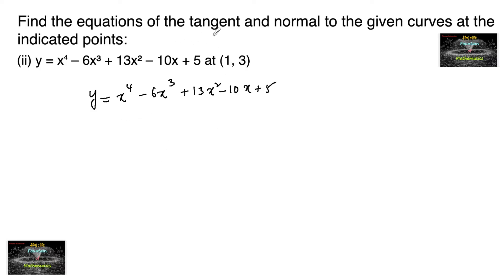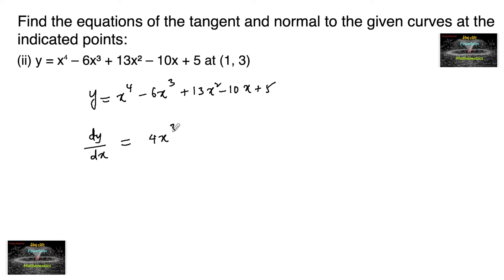To find the equation of a tangent, we need the slope of the tangent at point (1, 3). We differentiate with respect to x, giving dy/dx = 4x³ - 18x² + 26x - 10.